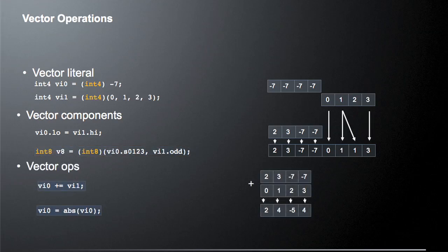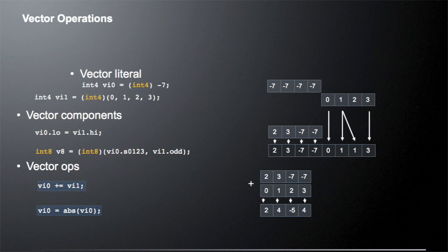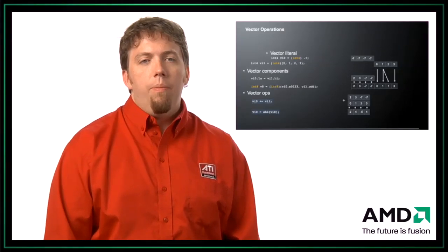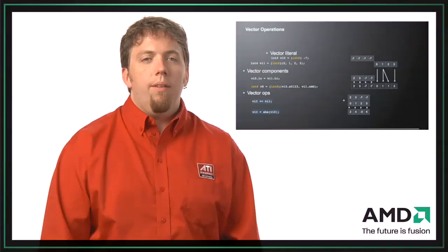There are also vector mathematical operations. For example, the plus-equals operator: vi0 += vi1. We take vi0's values 2, 3, negative 7, negative 7 and add vi1's values 0, 1, 2, 3. The result stored in vi0 will be 2, 4, negative 5, and 4. Another operation is the absolute value, which would give us the resultant vector 2, 4, 5, 4. There's a very verbose set of arithmetic operations available — I recommend going to the spec to see all of them.